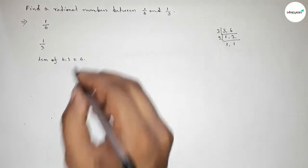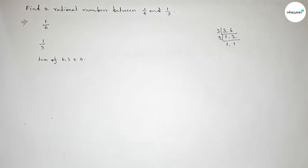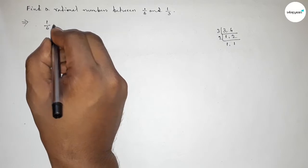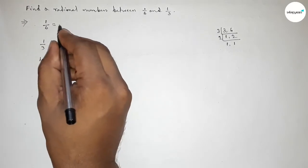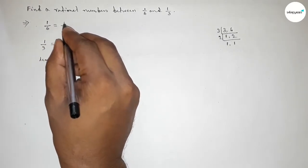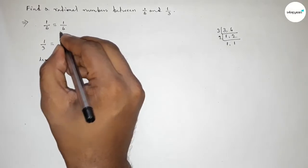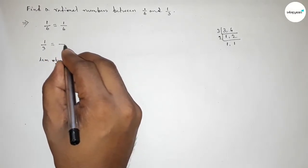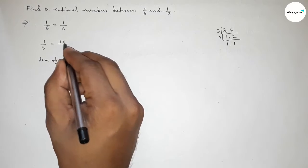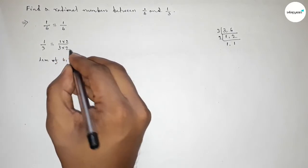So now first we have to multiply 1 over 6 by 1, so this is 1 over 6 obviously. And now multiplying 1 over 3 by 2 over 2, so this we can write as 1 over 6 and this is 2 over 6.